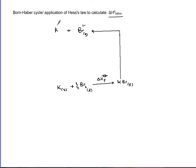This process is delta H lattice, which its magnitude indicates the strength of your ionic salt and its stability.